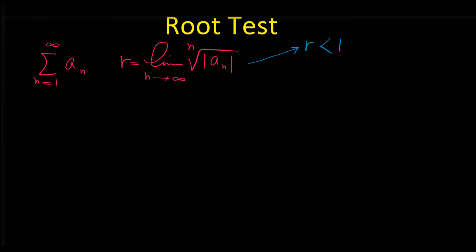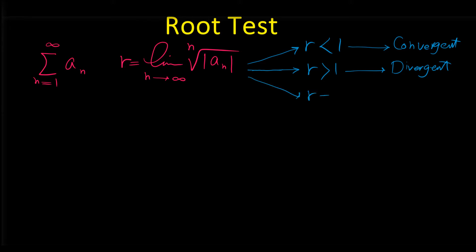If r is less than 1, then the series is convergent. If r is greater than 1, the series is divergent. And when r is 1, this test is inconclusive for the convergence or divergence of the series — it doesn't work to find out whether the series is convergent or divergent. So this test is useful only if the value of the limit r is less than 1 or greater than 1.